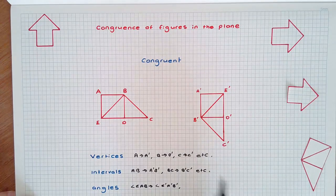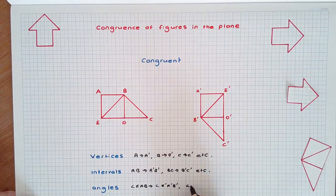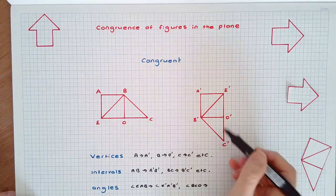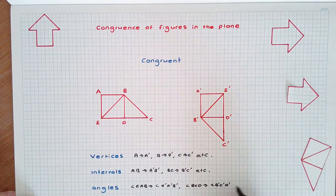Another example, angle BCD became B dash C dash D dash, etc.